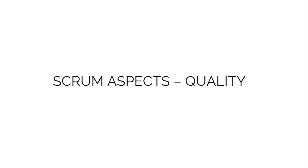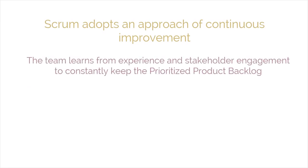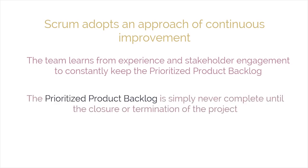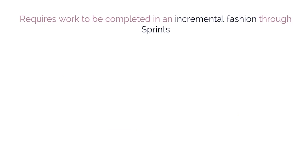Quality is the third aspect we are going to discuss. In Scrum, quality is defined as the ability of the completed product or deliverables to meet the acceptance criteria and achieve the business value expected by the customer. To ensure that a project meets its quality requirements, Scrum adopts an approach of continuous improvement, whereby the team learns from experience and stakeholder engagement to constantly keep the prioritized product backlog updated with any changes in requirements. The prioritized product backlog is never complete until the closure or termination of the project. Through repetitive testing, Scrum requires work to be completed incrementally through sprints, rather than waiting until the end to produce deliverables. This means errors get fixed right away, instead of being postponed until the end of the project.